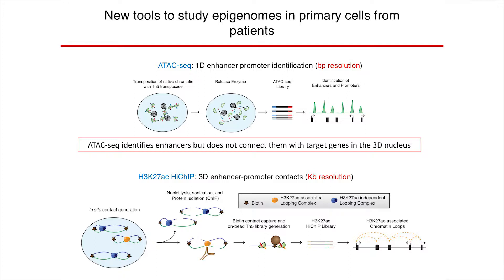For immunologists, ATAC-seq has been a revolution because you can now do this type of assay in really low cell input samples — 50,000 cells and even down to single cells. However, ATAC-seq is not as good at identifying in three-dimensional space where those regulatory sites go — how do they pair with genes in 3D space, and which genes do they regulate?